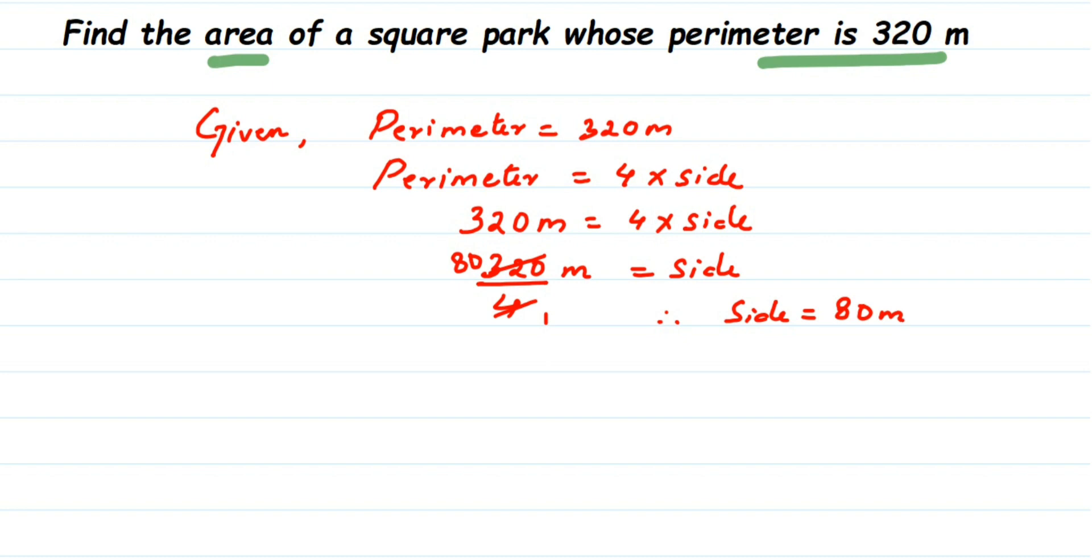Now we got the side, we can find out the area. Area of a square is side times side, or side squared. The side value is 80, so 80 meters whole squared. Square means multiplying 80 two times, which is 80 into 80.